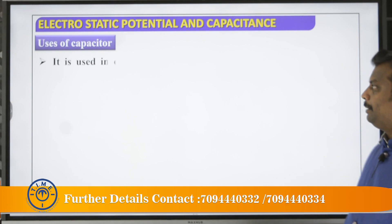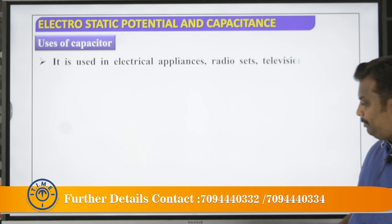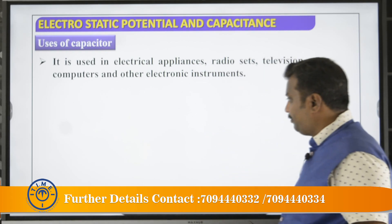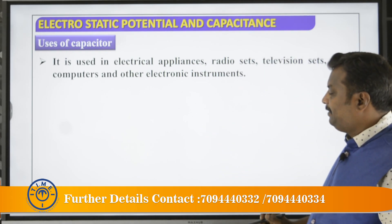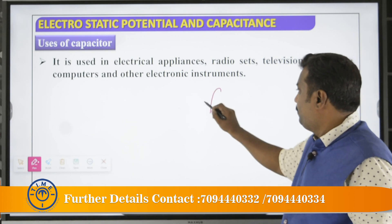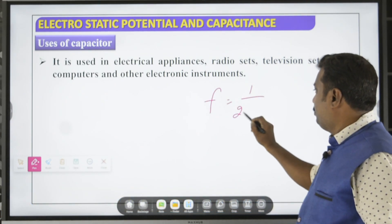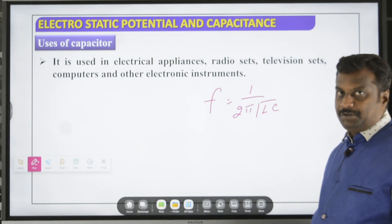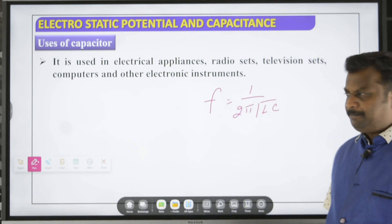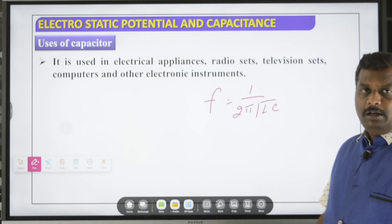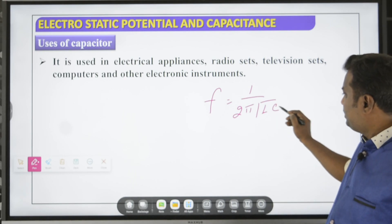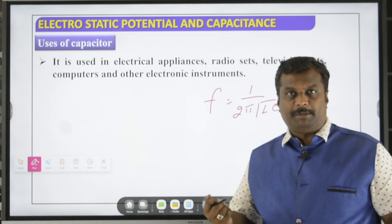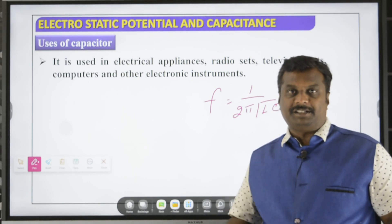What are the uses of a capacitor? For example, in a TV, channels are tuned by setting the lower frequency. The formula is F equals 1 divided by 2π times the square root of LC, where L is the inductor and C is the capacitor. We change the channel by actually changing the capacitance.